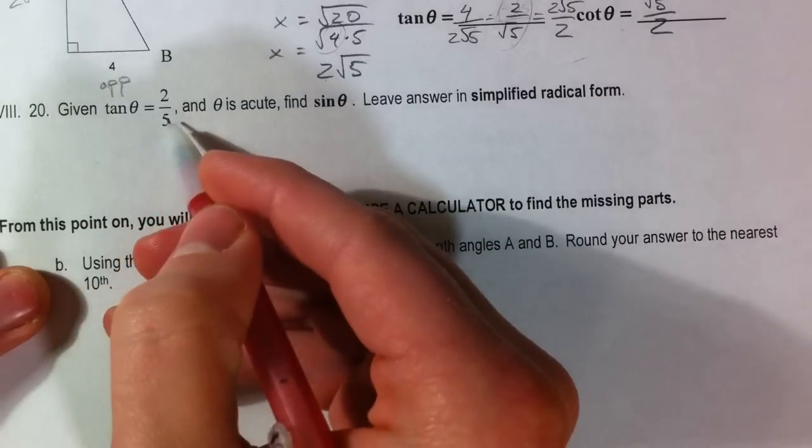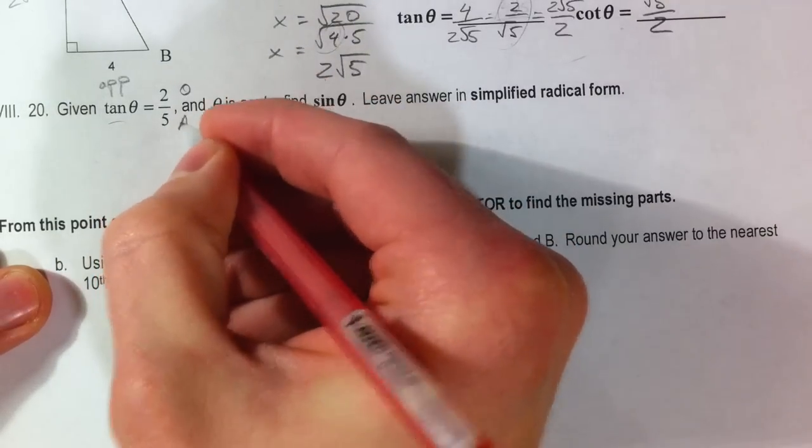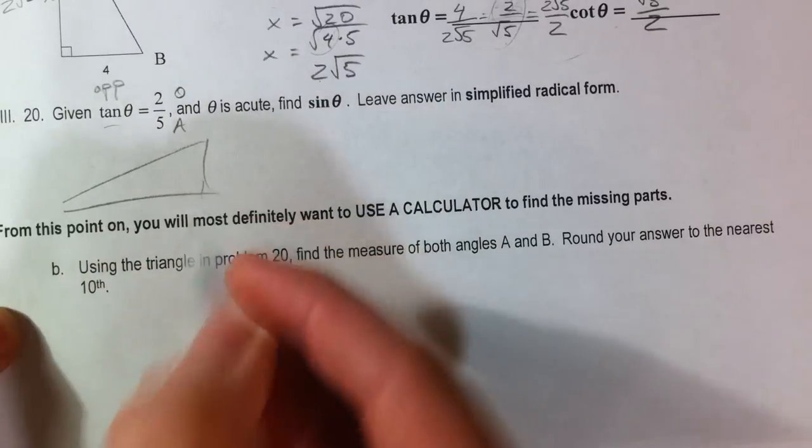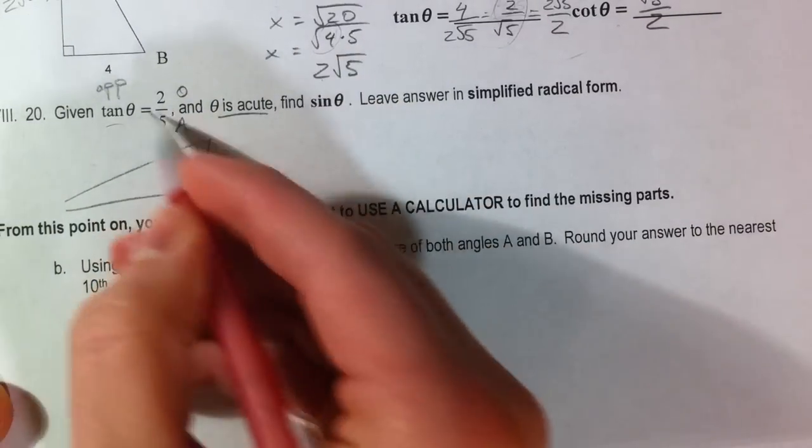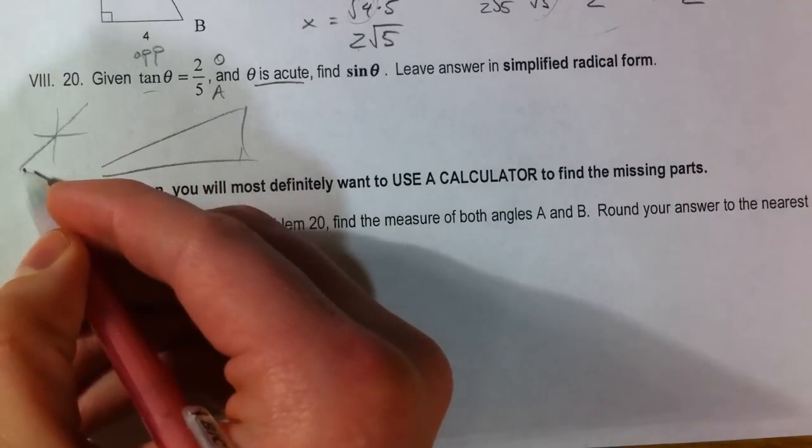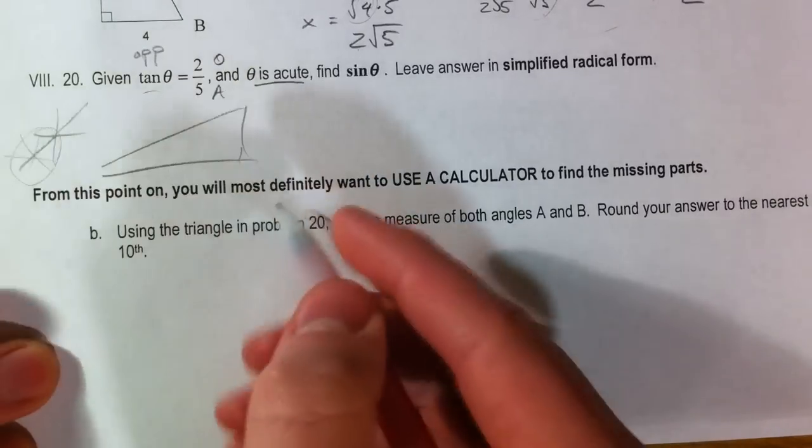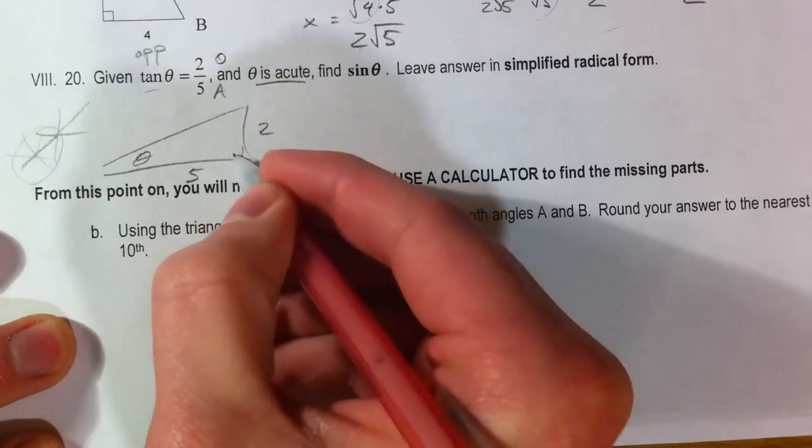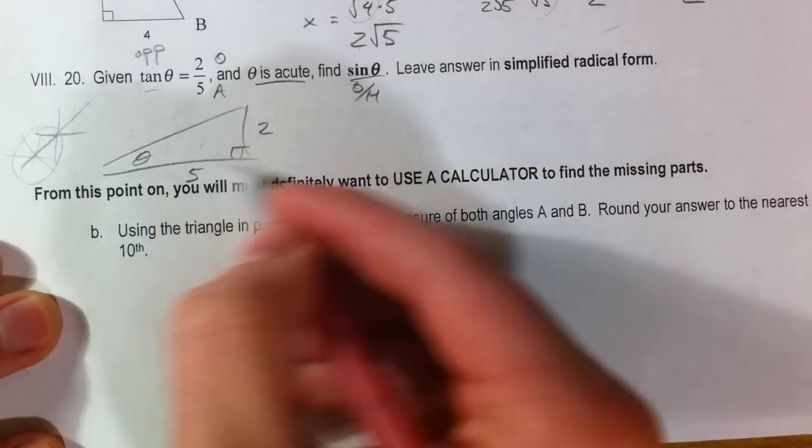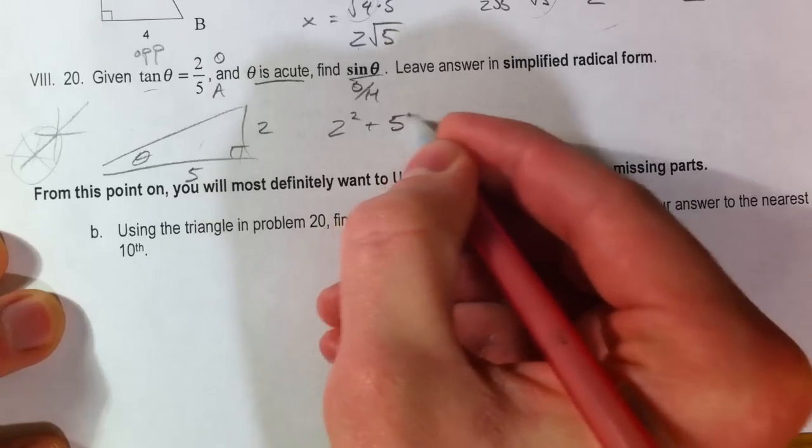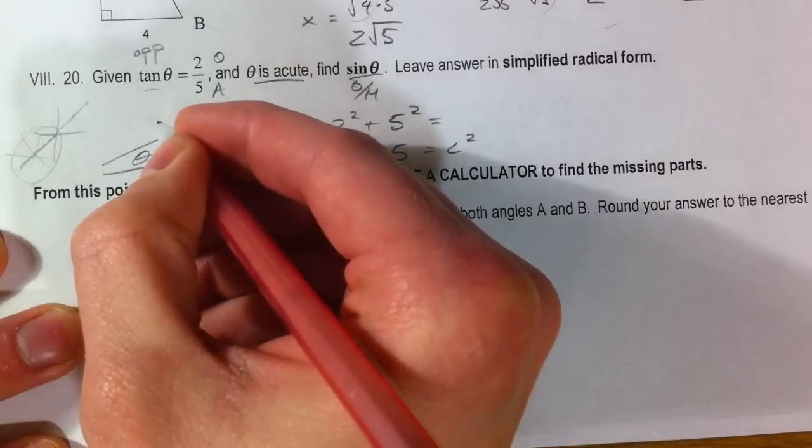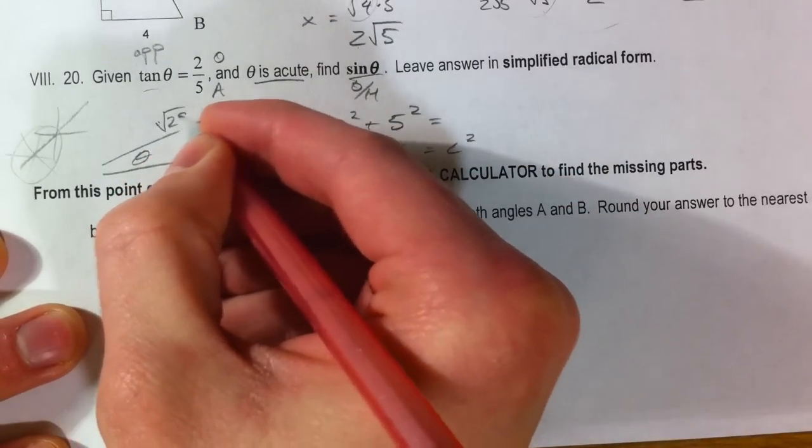Given tangent is 2 over 5. So tangent is opposite over adjacent. Find sine of theta. Leave it in simplified radical form. Now we're saying it's an acute angle because tangent is also positive in the first quadrant, positive and positive. Or when it's negative and negative. So we're ignoring this one. We're only going to take it in the first quadrant. Opposite is 2. Adjacent is 5. We want to find the sine, which is opposite over hypotenuse. And so we're going to use Pythagorean theorem to find our hypotenuse because we'll need it. So 4 plus 25. So we get square root of 29 for hypotenuse.